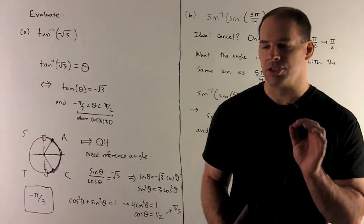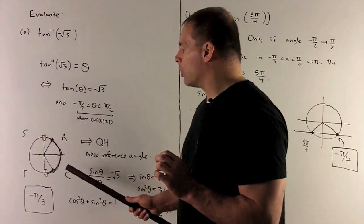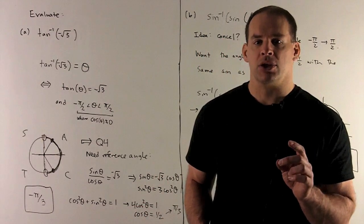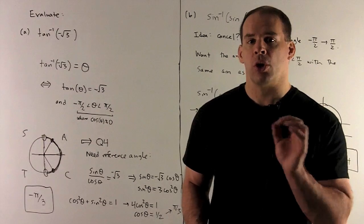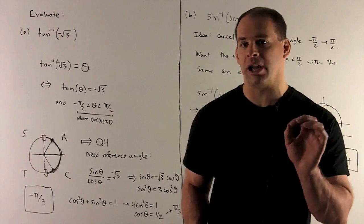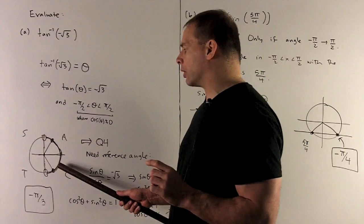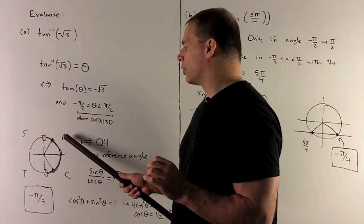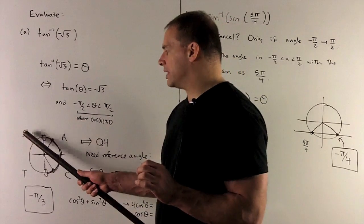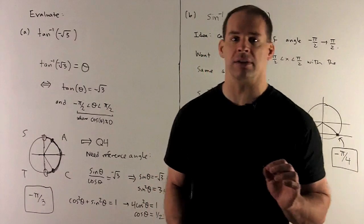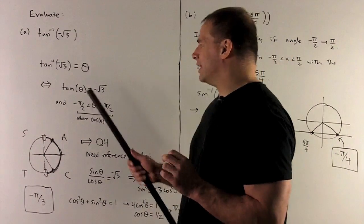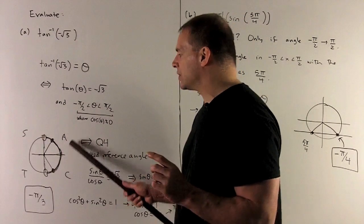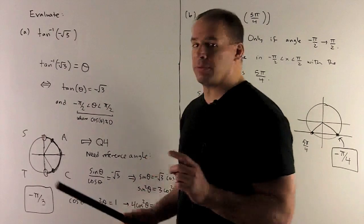The CAST method says we start in the lower right-hand corner — that gets a C, which stands for cosine. So cosine is the only trig function of those three that's positive in that quadrant. Moving around: in quadrant one, they're all positive; in quadrant two, only sine is positive; in quadrant three, only tangent is positive. Since tangent is minus square root of 3 and we're only allowed between minus pi halves and pi halves, that means we're in quadrant four.